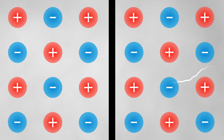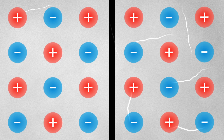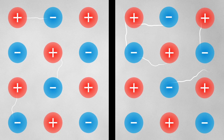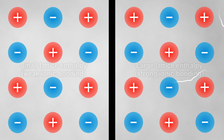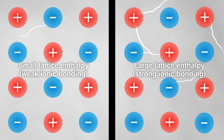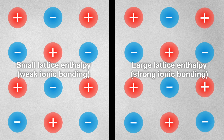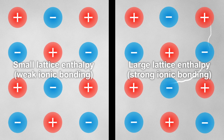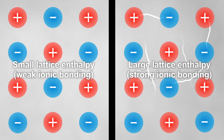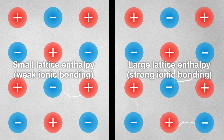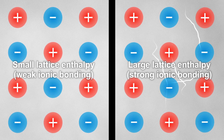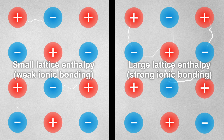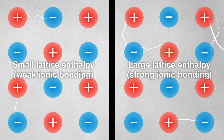Lattice enthalpies tell us the strength of ionic bonding. The higher the value of the lattice enthalpy, the stronger the ionic bonding. For this reason, it can be useful to measure the lattice enthalpy for an ionic compound.